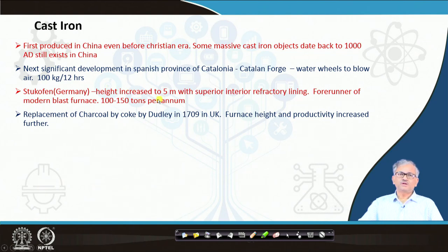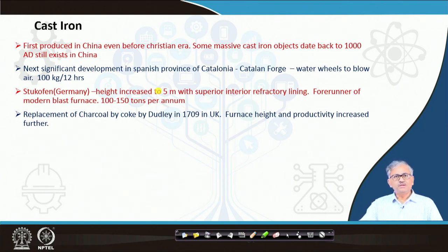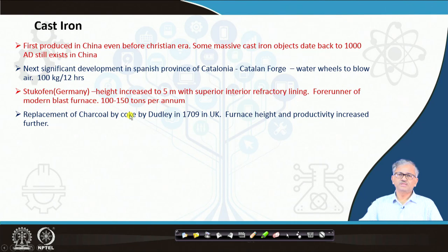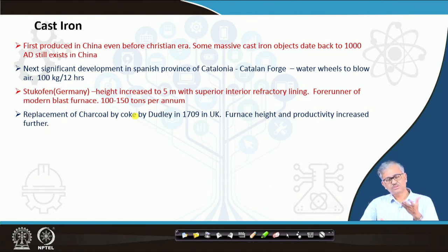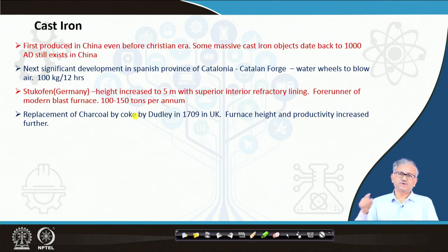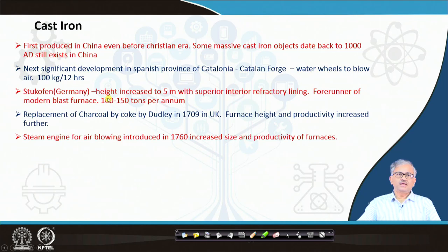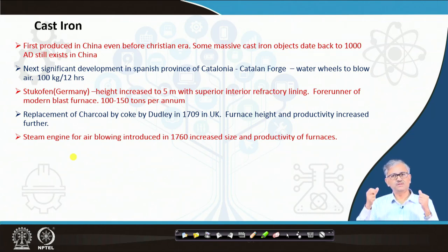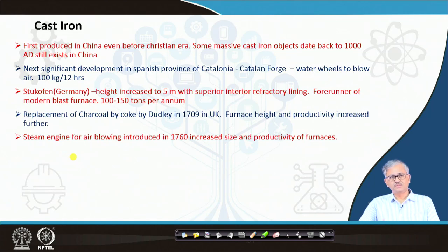So far all these furnaces used to run by charcoal/wood charcoal. Then it was replaced by coke in Dudley, by Dudley, in 1709 — early 18th century, in the UK. This is a great innovation — charcoal is replaced by coke. With coke you can increase the height of the furnace because coke is much stronger compared to charcoal; charcoal cannot bear much overburden — it fragments and produces dust. But coke will not, so with the introduction of coke you can increase the furnace height and also the productivity.